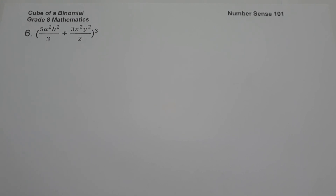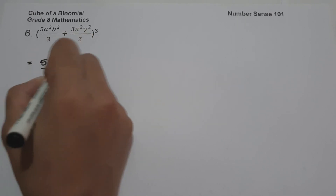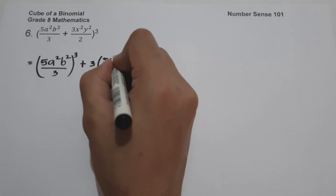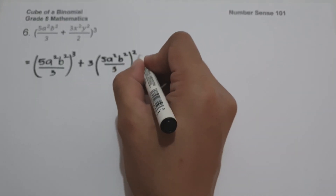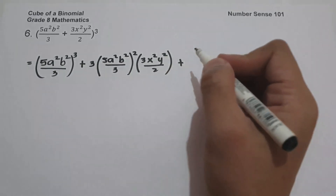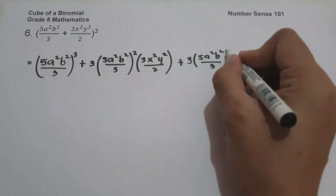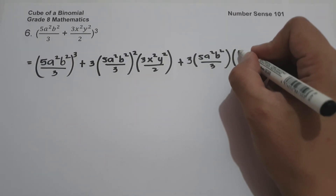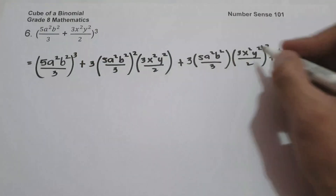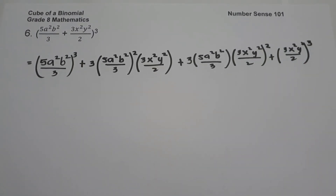To simplify Example 6: we have the cube of the first term, which is (5a²b²/3) raised to 3, plus the constant 3 times the square of the first term — (5a²b²/3) raised to 2 — multiplied by the second term (3x²y²/2). The third term is 3 times the first term (5a²b²/3) times the square of the second term (3x²y²/2) raised to 2. The last term is (3x²y²/2) raised to 3.